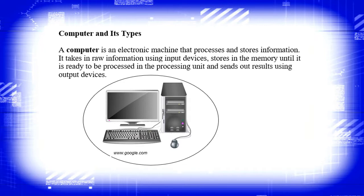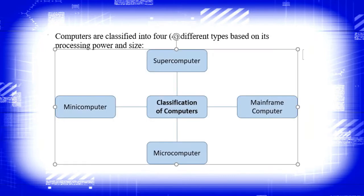A computer is an electronic machine that processes and stores information. It takes in raw information using input devices, stores it in memory until it is ready to be processed in the processing unit, and sends out results using output devices.